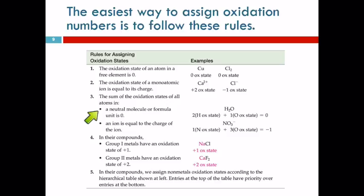If you have a neutral molecule or a formula unit, all the oxidation states have to add up to zero because the overall charge is zero, so the overall sum of oxidation states has to be zero. If it's an ion, then the oxidation states add up to whatever the charge is. So, on NO3 minus, the oxidation states of nitrogen and oxygen have to add up to minus one. In compounds, group one metals have an oxidation state of plus one, group two, plus two.